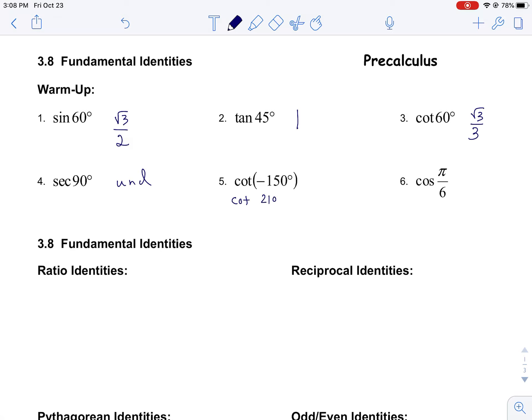Negative 150°, if you think of that, that's the same as 210°. So that's a 30 degree angle. I know the tangent of 30° is root 3 over 3, so the cotangent of 30° must be root 3. And 210° is in the third quadrant so it's positive.